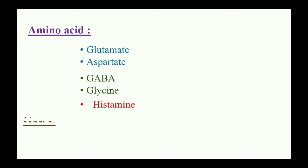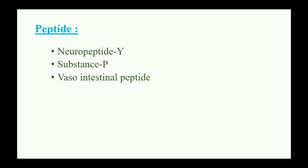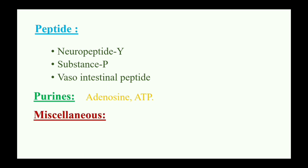Next class: gases. Examples: nitric oxide and carbon dioxide. Next class: peptides. Examples: neuropeptide Y, substance P, and vasoactive intestinal peptide. Next class: purines. Examples: adenosine and ATP. Last class: miscellaneous. Example: endocannabinoids.